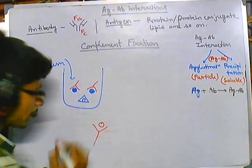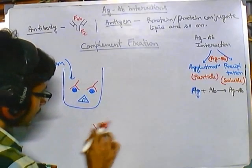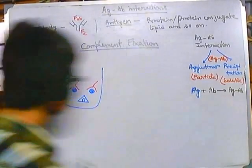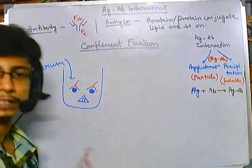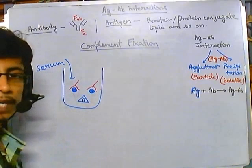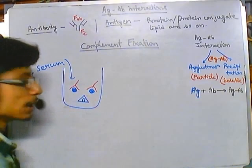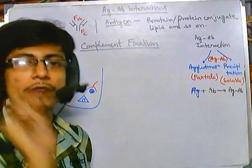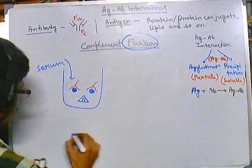The antigen-antibody complex doesn't look exactly like drawn here; they interact via specific binding sites. So antigen and antibody are both present. Antigens are indicators of disease and antibodies are generated by our own cells. Now, if there is an antigen-antibody complex present along with complement, the antigen-antibody has the ability to fix the complement.